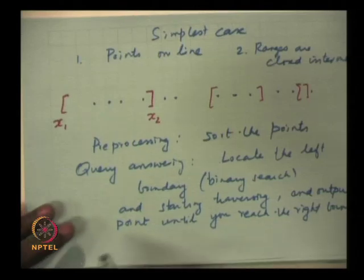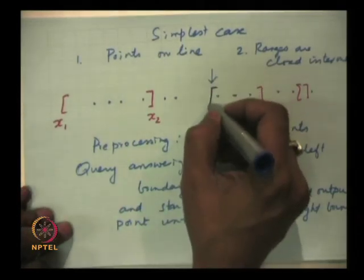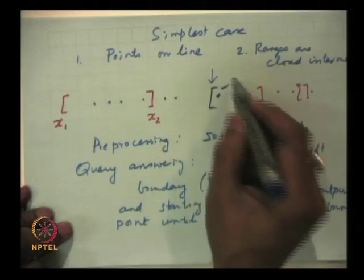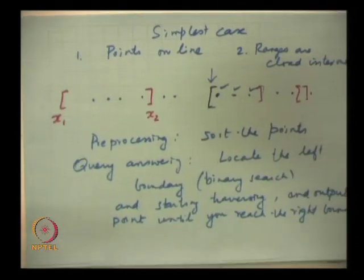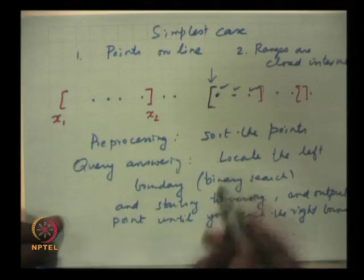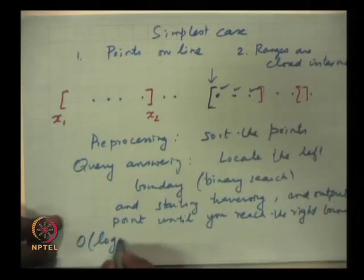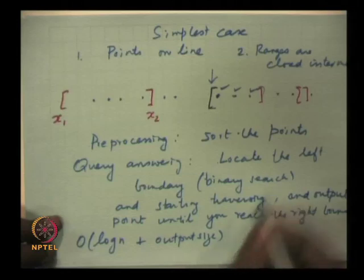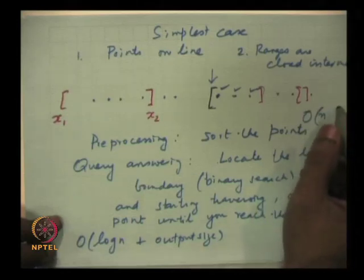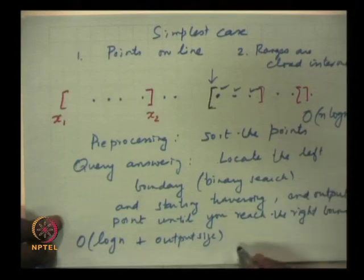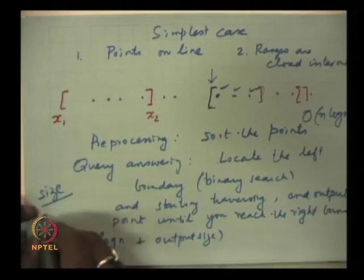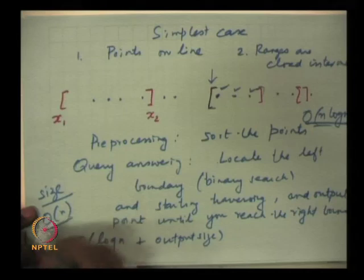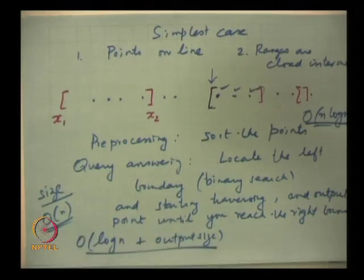The query processing time is O(log n) for the binary search plus the output size — that is your ideal bound of log n plus output size. Sorting the points takes O(n log n) using comparison sort, and the data structure size is just a sorted list, order n.